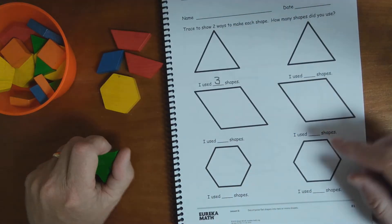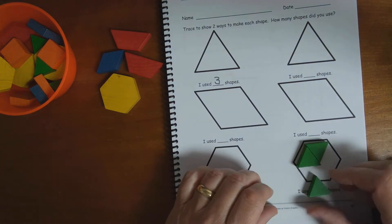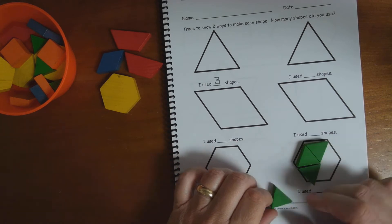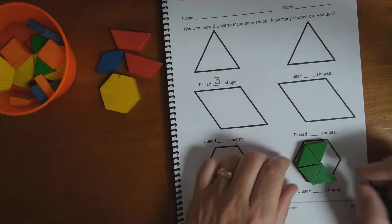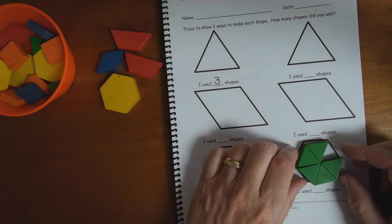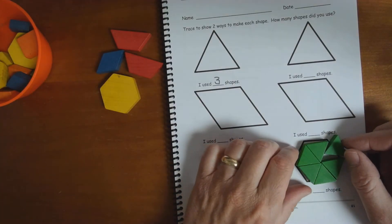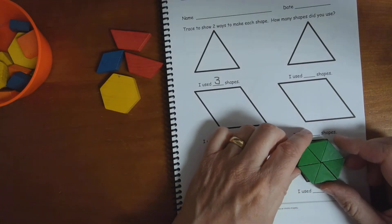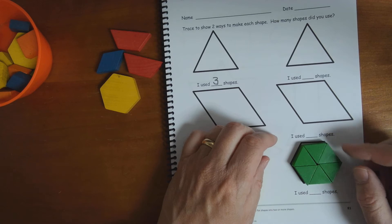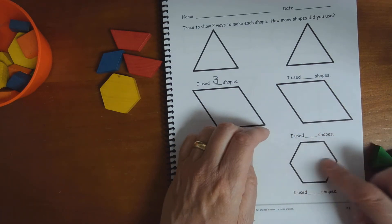How many of these triangles would I need to cover up that shape? Let's try it and see. Here's the four that I had before. Oh, not quite enough. Five, still not quite enough. That is six shapes. We used six shapes to cover that up. You don't have to draw just lines across connecting the things.